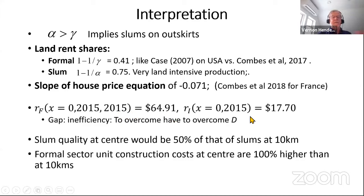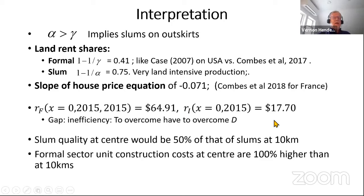If we projected rents to the city center in the informal sector, they would be much lower than the formal sector — there's a huge gap. It's these formalization costs D that would prevent overcoming this gap. But there is no slum land at the city center — the prices there are high enough that all slums have been removed.